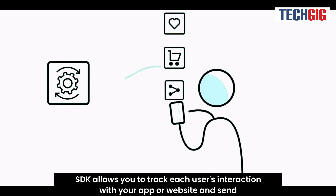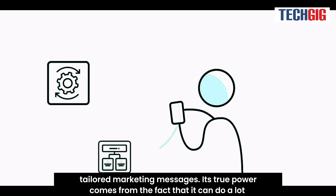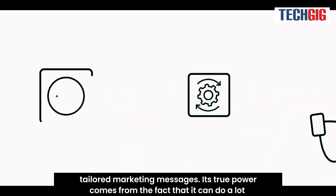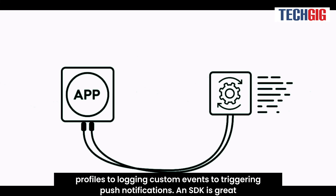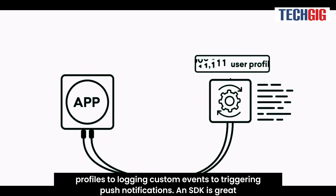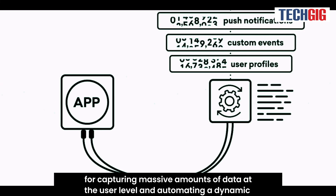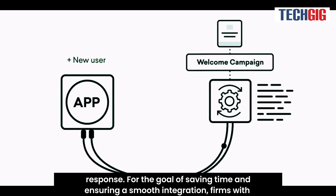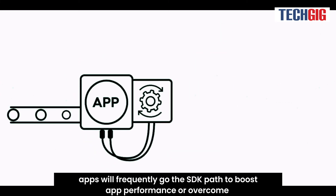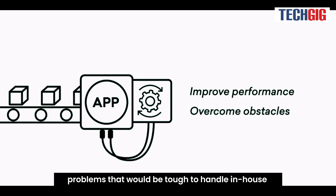An SDK allows you to track each user's interaction with your app or website and send tailored marketing messages. Its true power comes from the fact that it can do a lot of work in a short amount of time with just a few lines of code, from creating user profiles to logging custom events to triggering push notifications. An SDK is great for capturing massive amounts of data at the user level and automating a dynamic response. Firms with apps will frequently go the SDK path to boost app performance or overcome problems that would be tough to handle in-house.